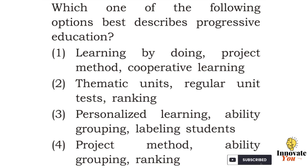Progressive education focuses on child-centered education, which centers on the child's current life and experience, putting children at the center of education and providing opportunities to harness their skills. It also supports the child's choice. The qualities of progressive education include roots in present experience, learning by doing, hands-on experience, problem solving, critical thinking, lifelong learning, and social skills. The correct answer is option 1: learning by doing, project method, and cooperative learning.